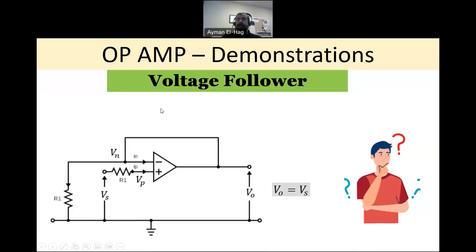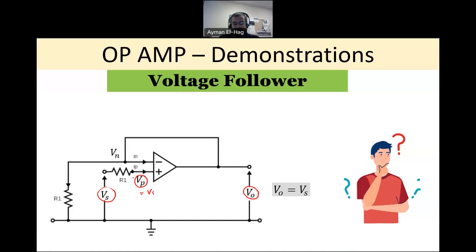Now let's answer why we need the voltage follower circuit. If V-out equals VS, why do we need such a circuit? From the non-inverting amplifier analysis, VP equals VS, and hence VN also equals VS. We substitute R2 (the feedback resistance) with a short circuit, making the output node the same, so V-out equals VS. It's a very simple circuit to analyze.